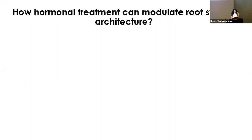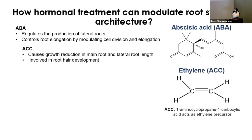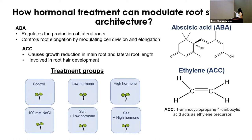Now we want to see how hormonal treatment can modulate this root system architecture. We decided to study two plant stress hormones. The first is abscisic acid, or ABA, which in previous work has shown to regulate the production of lateral roots and control root elongation by modulating cell division and elongation. The second hormone is ethylene, or ACC, which has shown to cause growth reduction in main root and lateral root length and is involved in root hair development. We have six conditions: control, low hormone, high hormone, salt, salt plus low hormone, and salt plus high hormone, chosen based on previous work in other species.